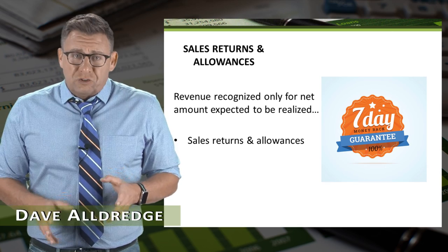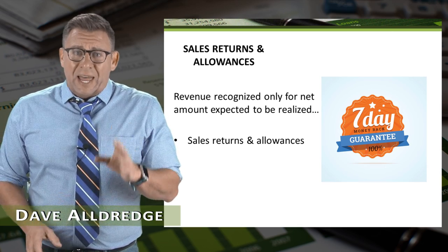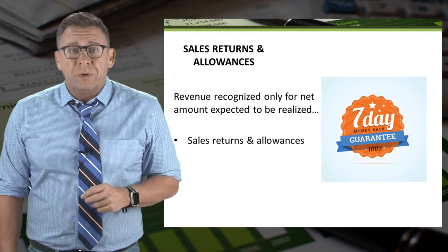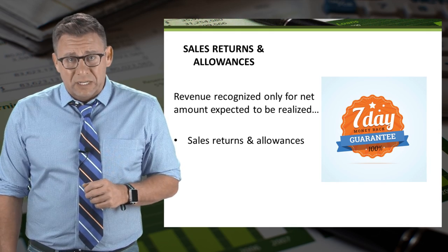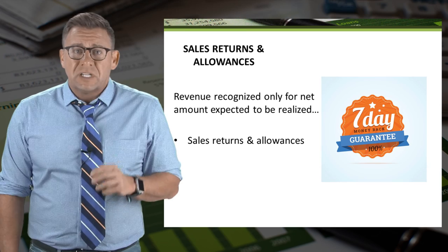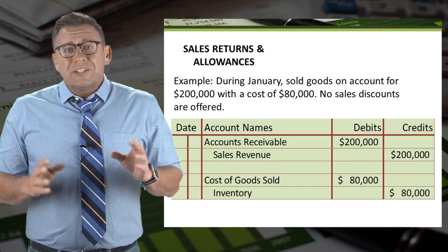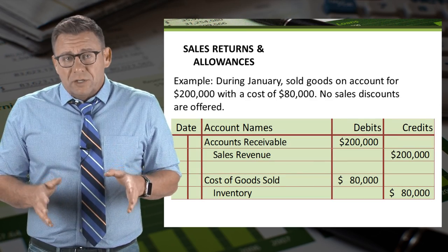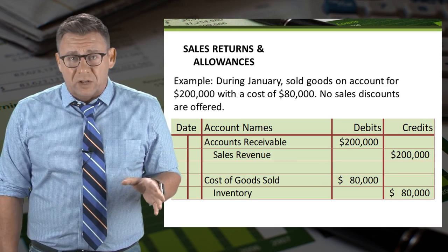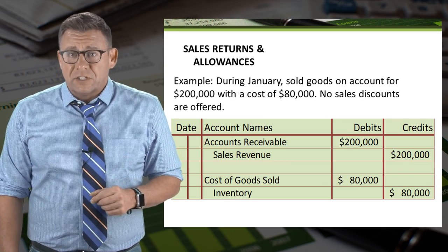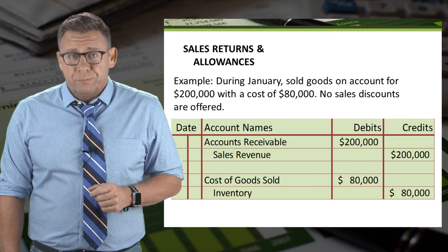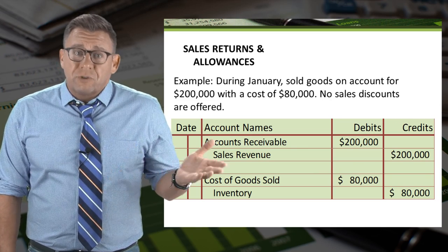Because the new revenue recognition standard allows revenue to only be recorded at the net amount to be realized, we need to learn how to account for the return of goods as well. So let's look at this example. During January, we sold goods on account for $200,000 with a cost of $80,000. No sales discounts were offered. This journal entry is pretty straightforward.